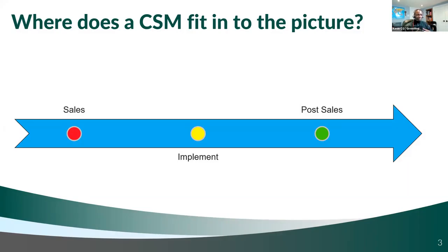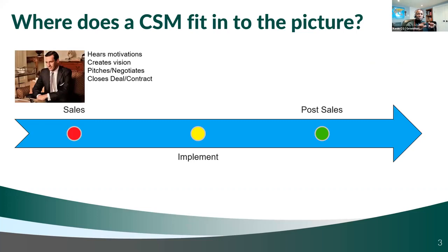To give you some context about the CSM role, I want to help you understand what a customer success manager does and where they fit into the picture when it comes to technology — how you buy it and how you subsequently use it. When you talk about the sales process, you've identified that you need to buy some HR management software, a CRM, or event management software. Typically, you're going to talk to a sales rep who will discuss your motivations, help you create a vision of what the solution can do, pitch and negotiate, and then close the deal.